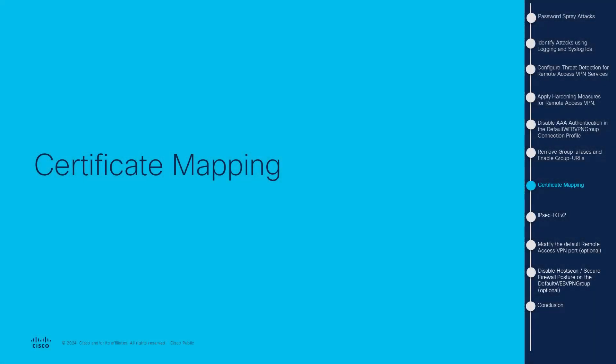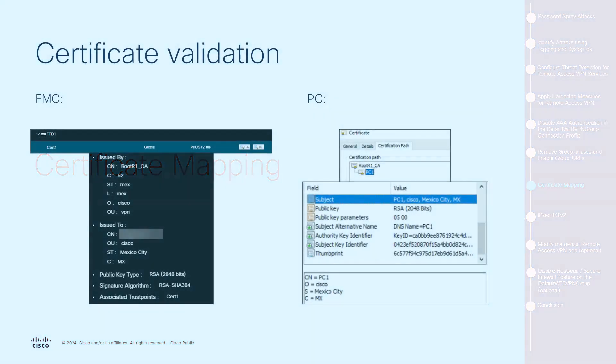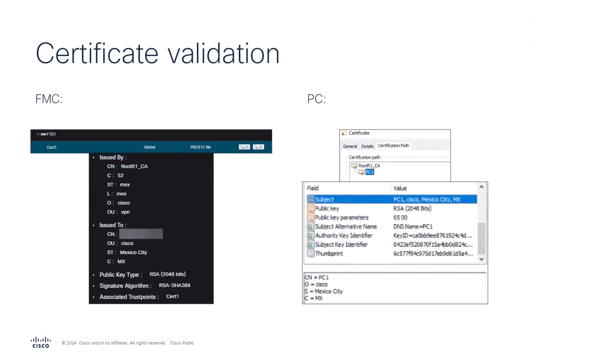Certificate Mapping: Use certificate mapping for connection profiles to map incoming connections based on client certificate attributes. Users with correct certificates are correctly assigned, while attackers who don't meet the criteria are directed to the default web VPN connection profile. Identify the certificate for this authentication method. On the left is the FTD certificate and on the right is the test machine's certificate. Both must match for correct authentication. Now let's see how this works with the certificate mapping measure.